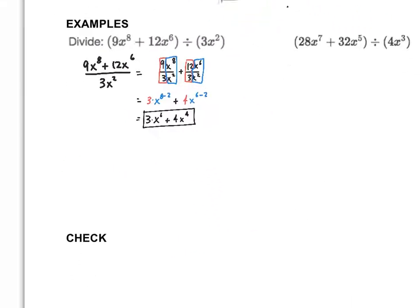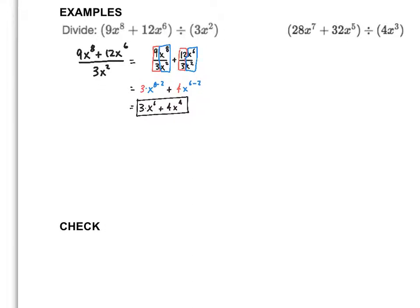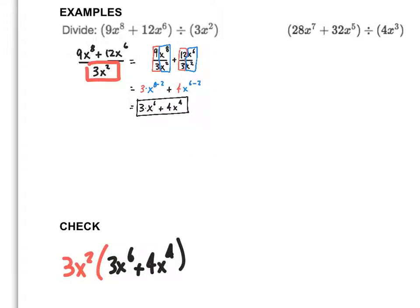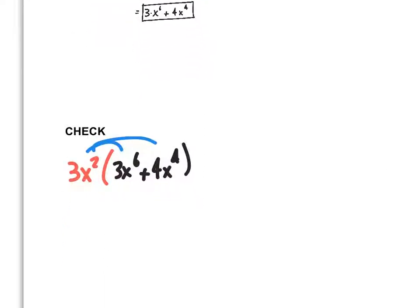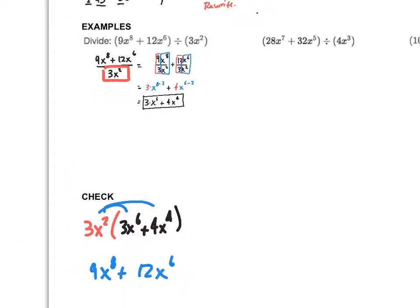Now I could check this. I could take my divisor, 3x squared, and multiply it by my quotient, 3x to the sixth plus 4x to the fourth. That gives me 3 times 3 equals 9x to the eighth, plus 3 times 4 equals 12, and x squared times x to the fourth equals x to the sixth — which was my numerator. Whenever you divide polynomials, you can check if you're doing it correctly.